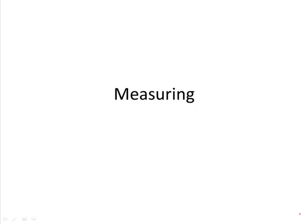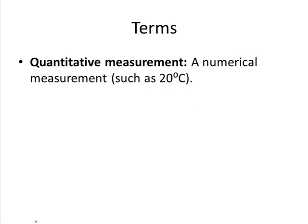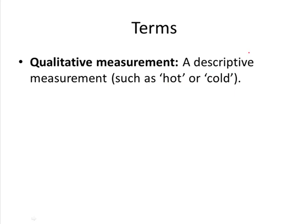It's very important to be able to do a measurement when we do experiments in science. One can measure quantitatively, meaning that we get a numerical measurement like 20 degrees Celsius, or we can measure qualitatively where we don't actually get a number but we get a description like hot or cold.